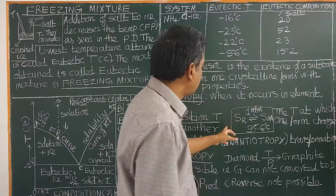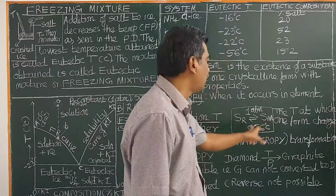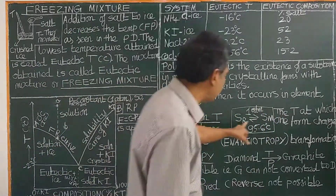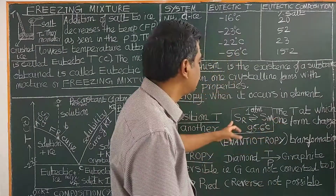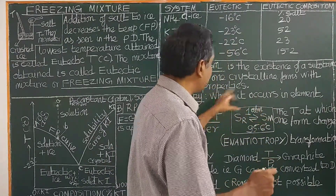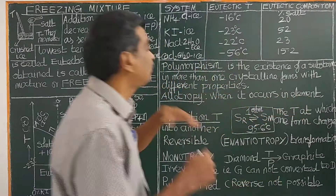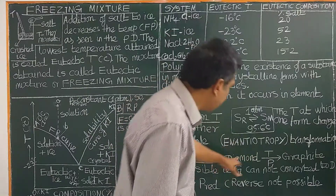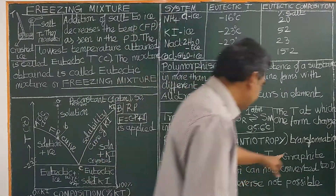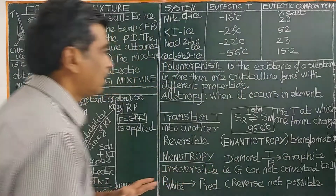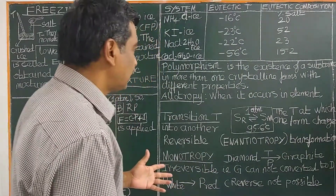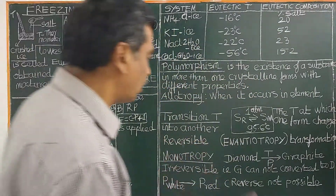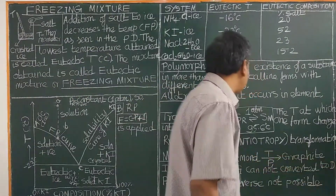When a chemical element occurs in different crystalline forms with different properties, the phenomenon is called allotropy. For example, sulfur monoclinic and sulfur rhombic are allotropic forms of sulfur. Diamond and graphite are different crystalline forms of carbon with different properties. There are two allotropic forms of carbon: diamond and graphite.